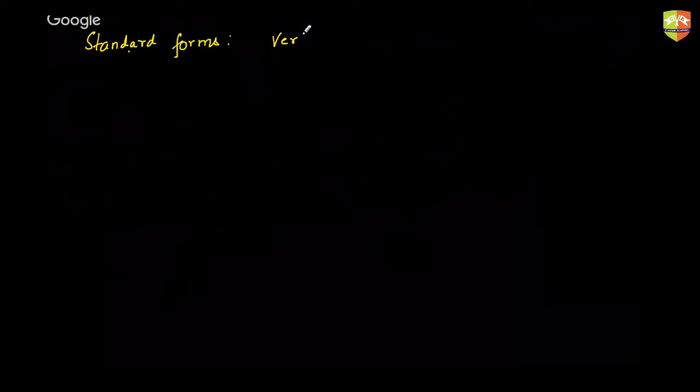So far we were talking about cases of a parabola whose vertex was at the origin and whose axes were exactly the x-axis or the y-axis. Those are called standard forms. Standard forms are those cases where the vertex is at the origin and the axis of the parabola is either the x-axis or the y-axis.